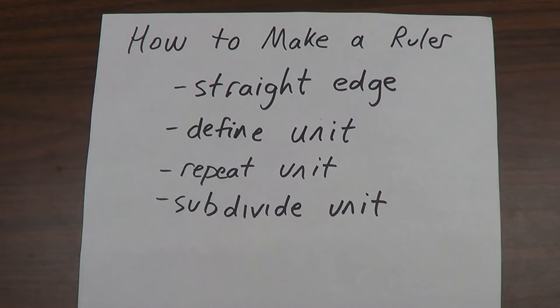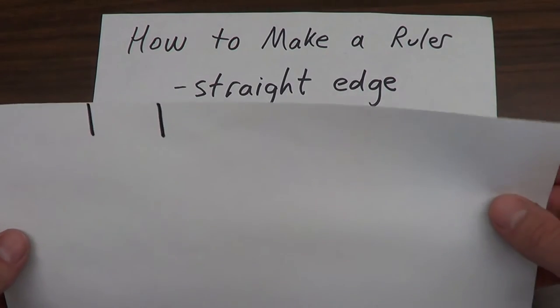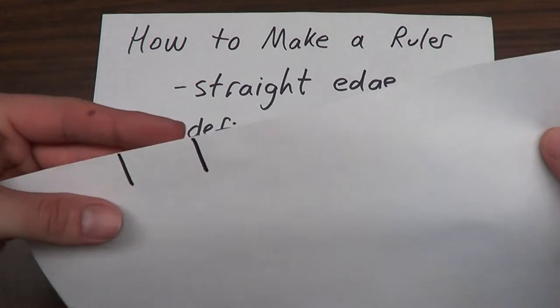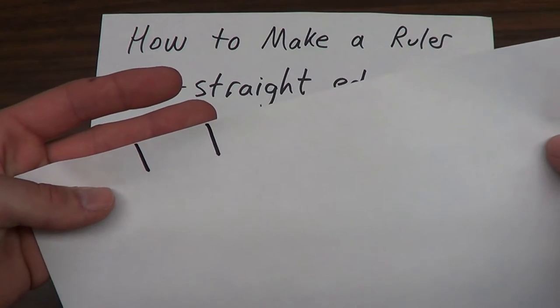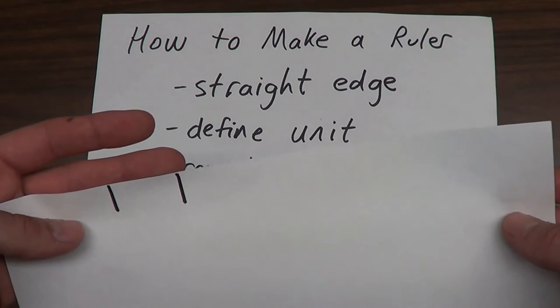a well-defined unit, such as this. I've taken a piece of paper which has a straight edge and then I've drawn two lines which are separated there. This gives us a well-defined unit.